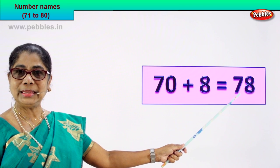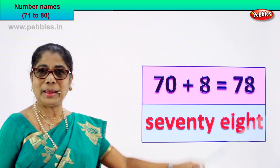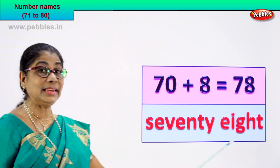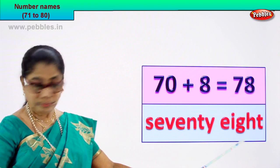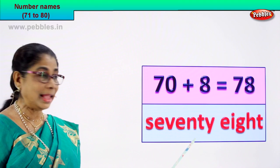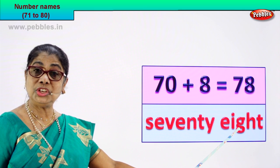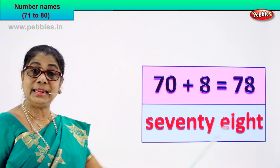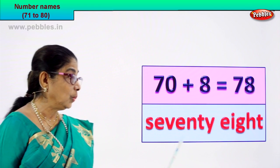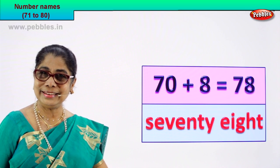How do we write its name? 78 — you know to spell 70, you know to spell 8. So 78 numeral, we write its name as seventy-eight: s-e-v-e-n-t-y — 70, then e-i-g-h-t. 78. Numeral 78, we write its name as seventy-eight. Good.